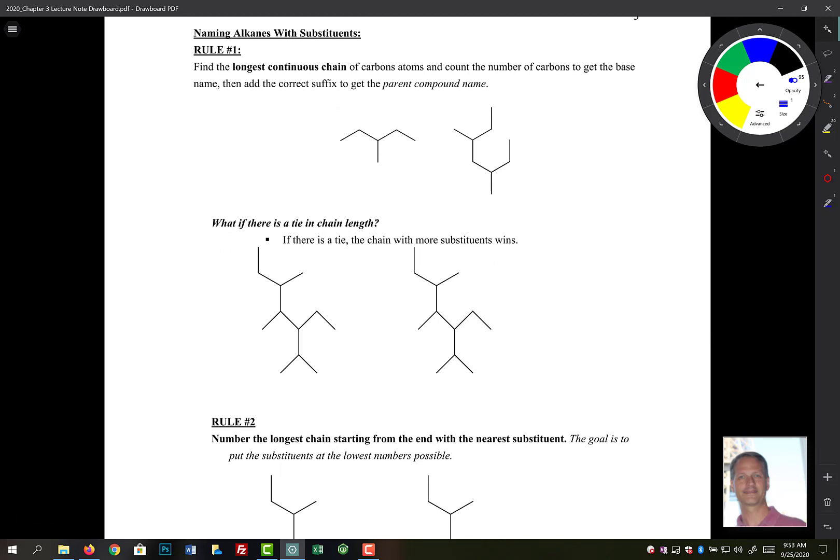As far as naming these things, the first thing that we want to do here is we want to find the longest continuous chain of carbon atoms. We're going to number the carbons to get the base name, and then we're going to add, in this case, A and E to get the compound name. So when we look at this molecule, this first molecule,